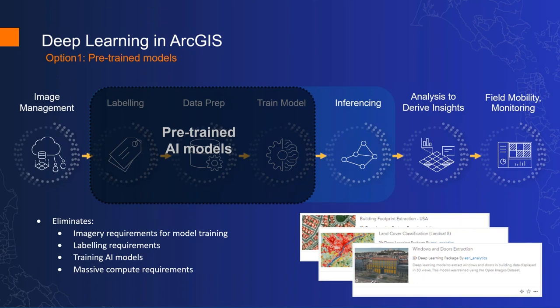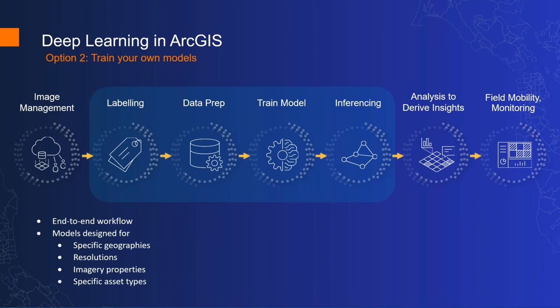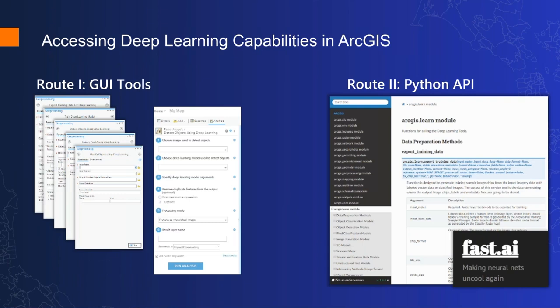Pre-trained models really give you a jump start, but there are several scenarios where you need to train your own models — specific to your geography, specific to your imagery properties, or for an asset for which we don't provide a pre-trained model. For that you can use the complete workflow — we've got all required tools in ArcGIS to design models for your specific geography, resolution, and imagery properties. To train your own models you can take two routes: GUI tools or an API script. The output of both is the same, and in your classroom some students may prefer GUI tools while others prefer the API. These two routes are completely interoperable and deliver identical results.